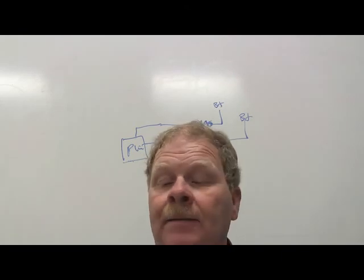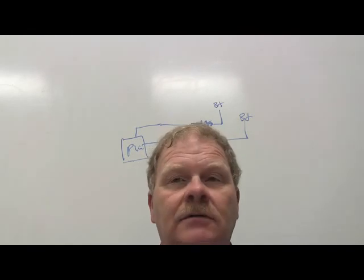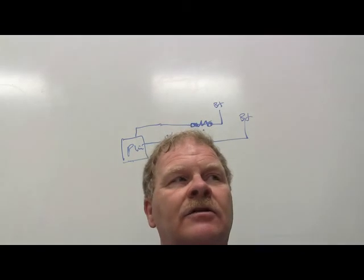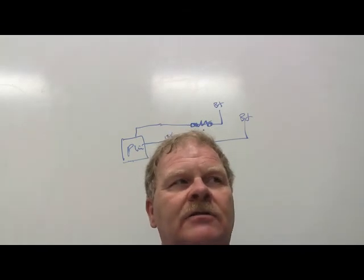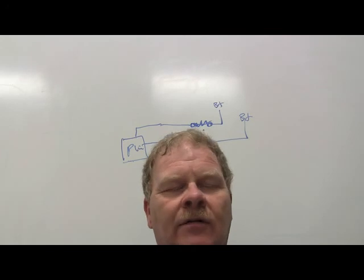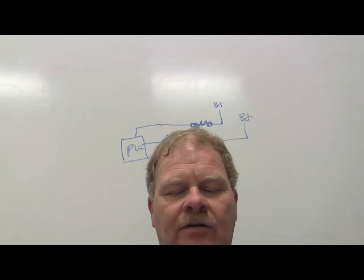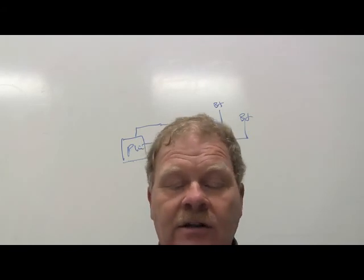Explain the principle of operation of a Hall effect switch. That distributor has a Hall effect switch in it. Two-wire Hall effect switches nowadays have circuitry inside that switches off and on when a magnetic tooth passes by. If current is allowed to flow through a thin conducting material exposed to a magnetic field, another voltage is produced.